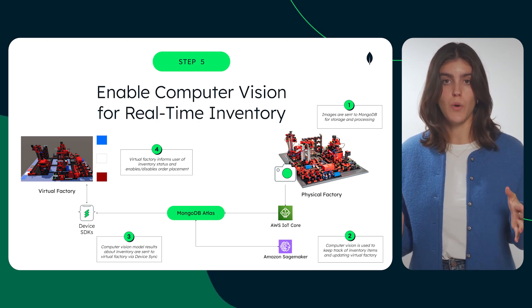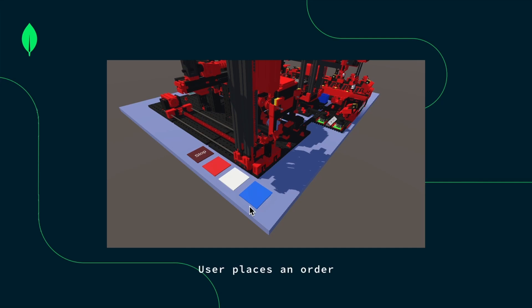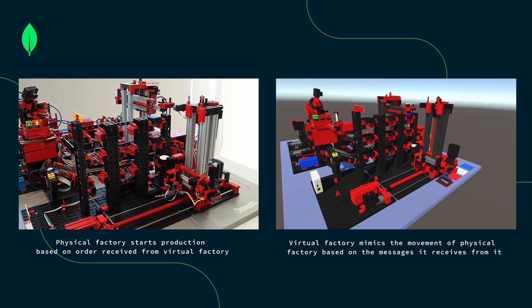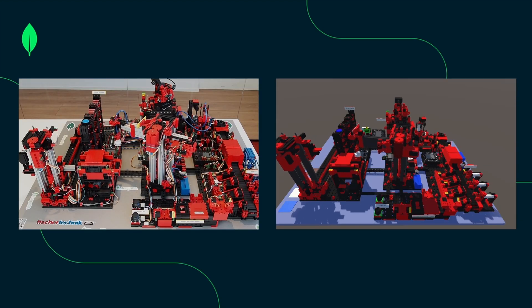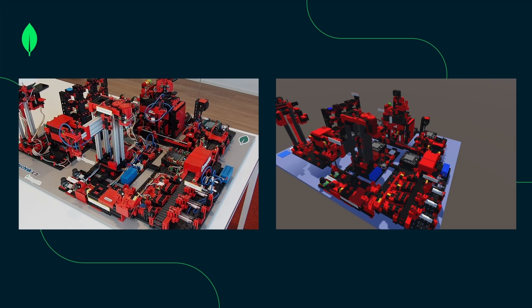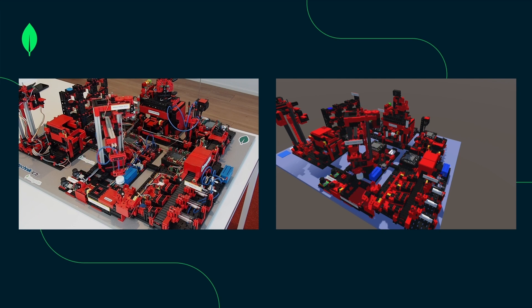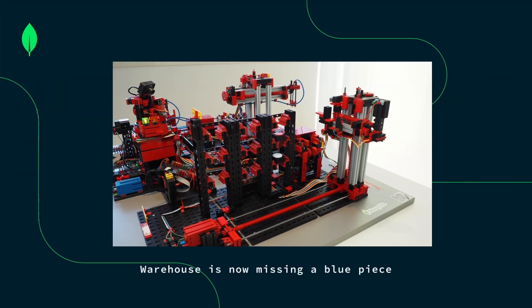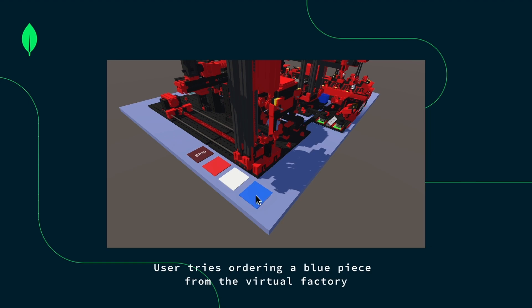Now that we've explained how everything works, let's see it in action. The user puts a VR headset on and places an order for the blue piece in the virtual world. The physical factory starts production based on the order received from the virtual factory. The virtual factory then mimics the movement of the physical factory based on the messages it receives. Everything is working smoothly. But let's see what happens when the physical factory is missing a blue piece. The user with the VR headset on tries to order a blue piece again and instantly receives a notification that the physical factory is out of blue pieces. All of this happens in real time under one platform, MongoDB Atlas.